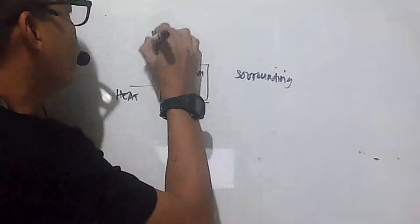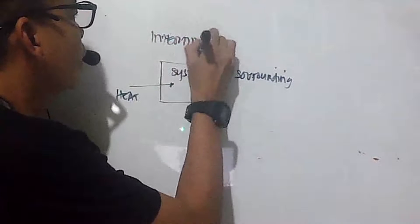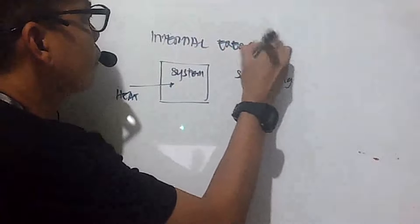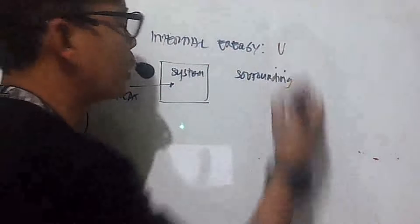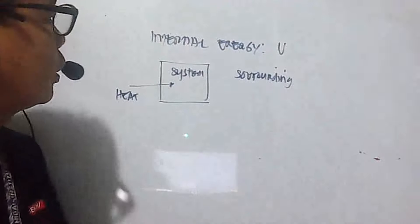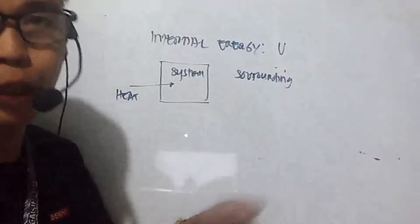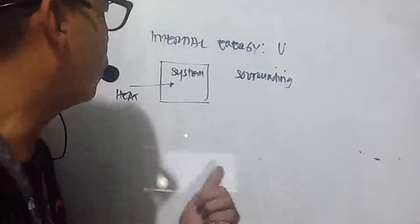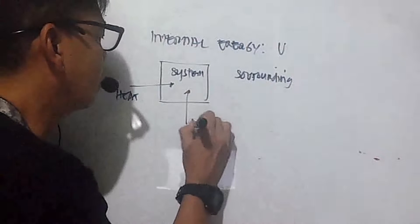There will be changes in the internal energy of the system. Internal energy is represented by the capital letter U. So delta U is the change in internal energy of the system — this changes when heat enters or exits, or when work is done.